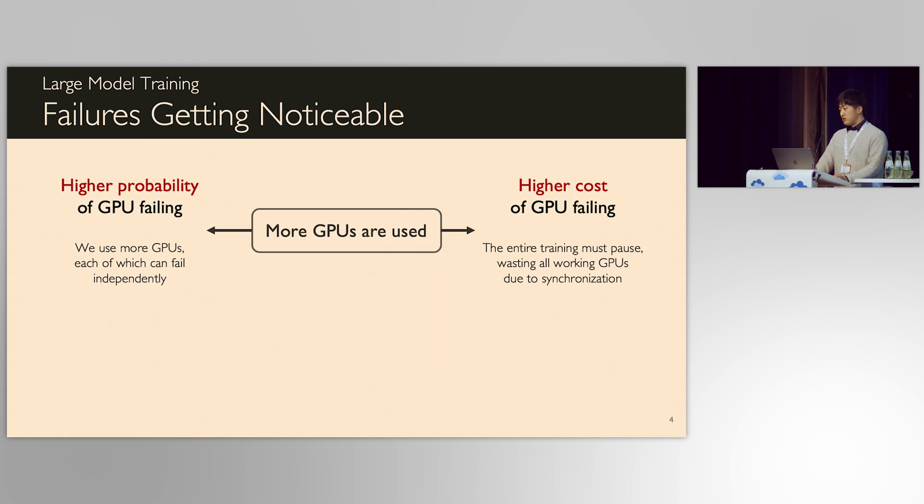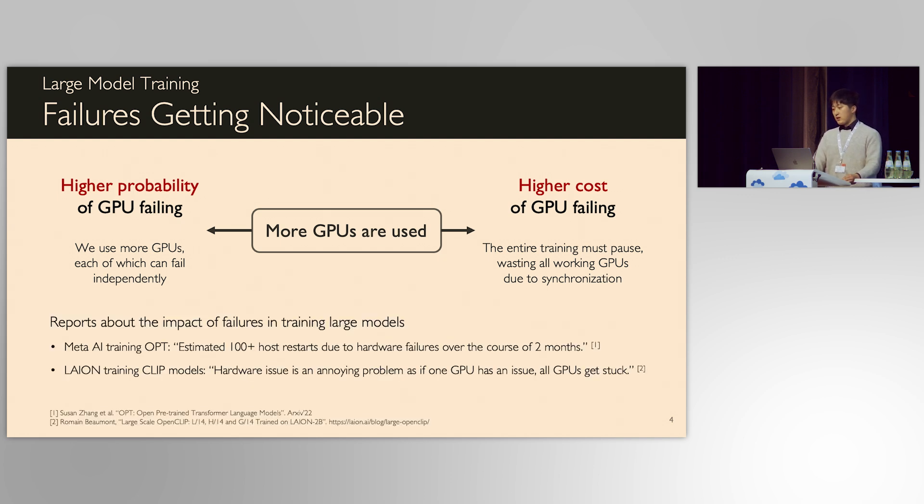While Gemini introduced why fault tolerance is very important, I'd like to reiterate that. Hybrid parallelism enables using hundreds or thousands of GPUs for a single job, but this raises the traditional problem of distributed execution: fault tolerance. The more GPUs are used, the higher probability of failures and cost of each failure are at the same time, so overheads from failures are getting noticeable. This is even worse in distributed training because all devices must be synchronized for every iteration, meaning just one GPU failure can make the entire job stuck. Some reports from industry like Meta or Lion complained that the impact of failures were not ignorable.